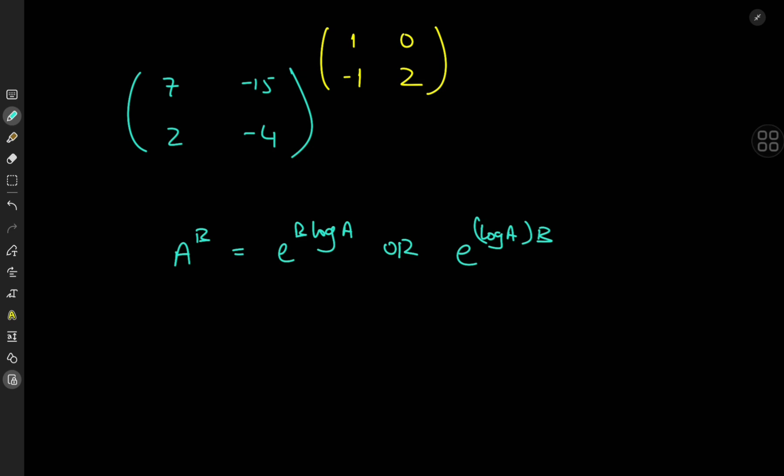So let's evaluate these two cases and then look at a case where a matrix raised to another matrix could be well-defined. We're going to work through an explicit example where this matrix here is matrix A and this matrix here is matrix B.